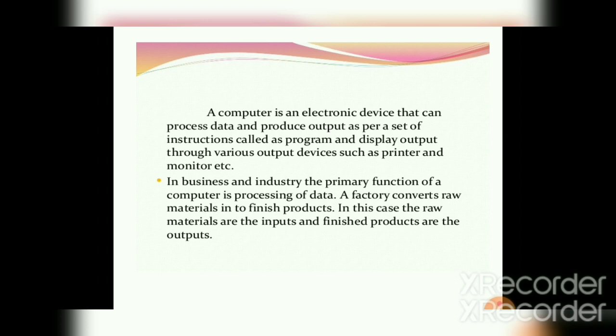In business and industries, the primary function of a computer is to process data. A factory converts raw materials into a finished product — the raw materials are nothing but input and the finished product is output. For a real-time example: if you want to take a printout, you give the command 'print' and the computer gives you a printout. The command is the input and the printout is the output.